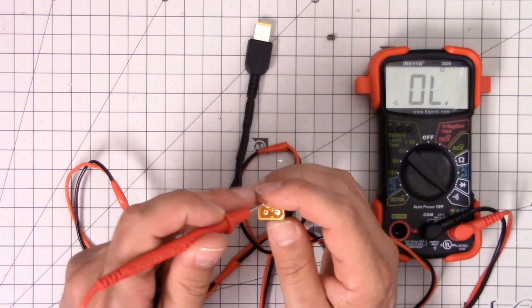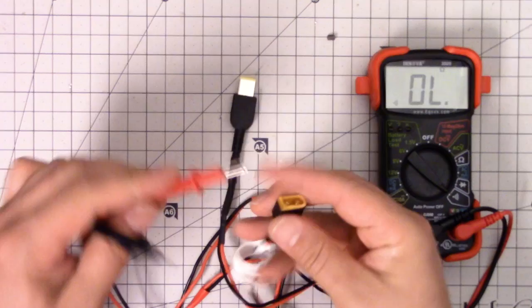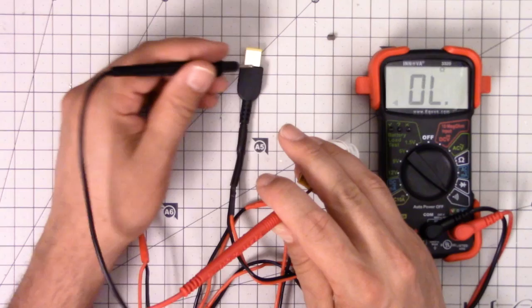When doing continuity, it usually doesn't matter whether you're using red or black, which one goes where. Usually if electricity flows one way, it'll flow the other way. So I'm going to touch the negative pin here. I'm going to touch the outside there. Bingo. Got it. Yes. Continuity. That's what we want.